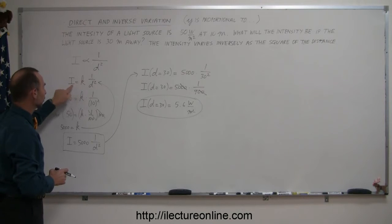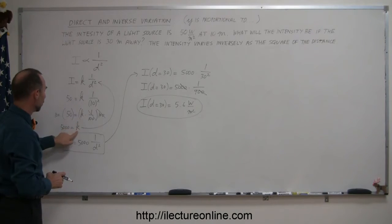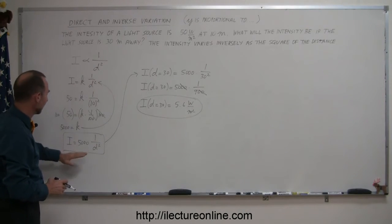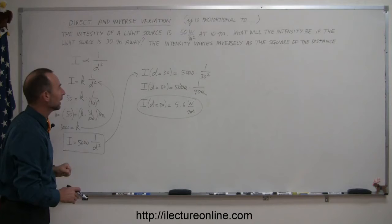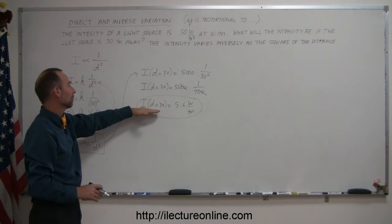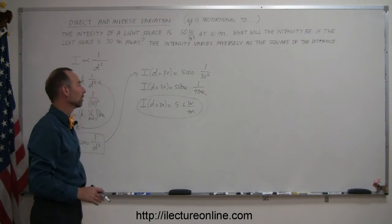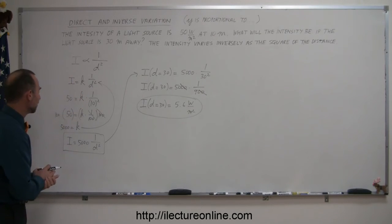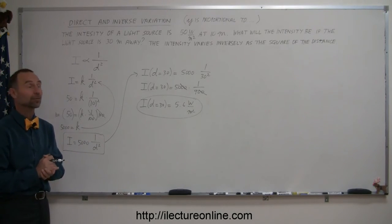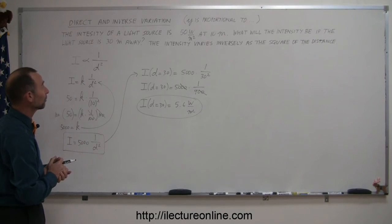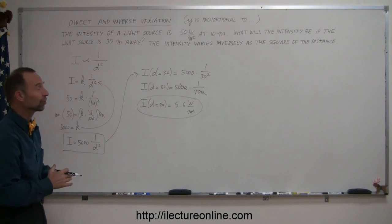Then plug in the values for your variable so you can figure out what k is equal to. Once you do that, you plug that back in to get your equation including the value of k. And then you plug in a new value for the independent variable to calculate the value for the new dependent variable, assuming you know what the information is that's given to you. That's how you do these kinds of problems.